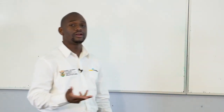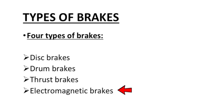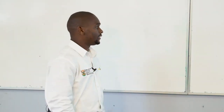There are different types of brakes, but in Fitting Level 3 we only cover four types: a disc brake, a drum brake, a thruster brake, and electromagnetic brakes. We are only looking at these four types of brakes.